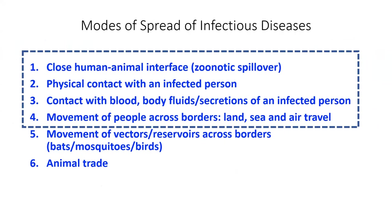There are various known modes of spread of infectious diseases. The most common mode of spread of new infectious diseases that we are now seeing since the last two decades is the close human-to-animal interface, also known as zoonotic spillover. Several new or re-emerged diseases have spread through this route. Another common mode of spread is physical contact with an infected person, contact with blood, body fluids, or secretions of an infected person.